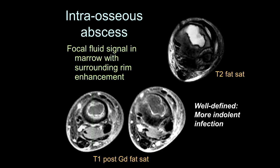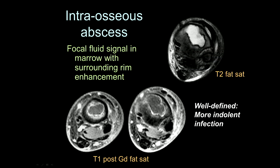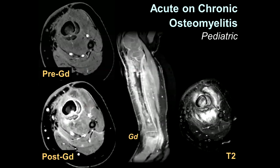These abscesses can become more chronic, and when they become more chronic, they become less inflammatory. The body walls off the infection, leading to an appearance of fluid signal inside the bone, usually at the metaphysis. If you give contrast, you'll see thick rim enhancement again. In this situation, if there's no clinical history provided, this could look like a tumor. But you have to consider the possibility of an intraosseous abscess, especially in the susceptible population.